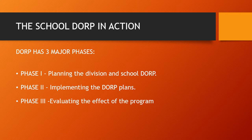Now let's have the school DORP in action. The DORP program has three major phases. Phase one refers to planning the division and school DORP. Phase two is implementing the DORP plans. Phase three is evaluating the effect of the program.